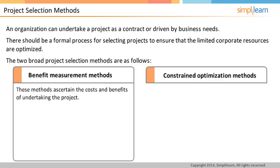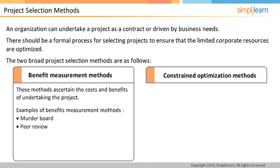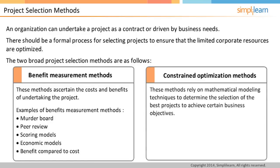The benefit measurement methods focus on ascertaining the costs and benefits of undertaking the project. The methods under benefit measurement method include murder board, where a panel of experts shoots down a new project idea, peer review, scoring models, economic models, and benefit compared to cost. The constrained optimization methods rely on mathematical modeling techniques to determine the best selection of projects, including linear programming.